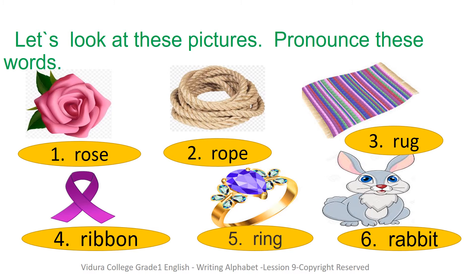Picture number 1 - Rose. Number 2 - Rope. Number 3 - Rug. Number 4 - Ribbon. Number 5 - Ring. Number 6 - Rabbit. When we pronounce these words - Rose, Rabbit - what sound can we hear at the beginning? The sound R. What is the sound? The sound R. Very good.